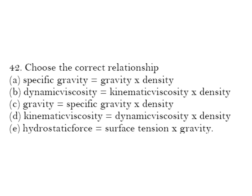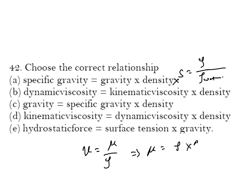Choose the correct relationship. Specific gravity is density of fluid divided by density of standard fluid — for liquids, the standard fluid is water. Dynamic viscosity equals kinematic viscosity multiplied by density (μ = ρν), so B is your correct answer. Kinematic viscosity is dynamic viscosity divided by density — multiplication here is not possible, so that option is incorrect.